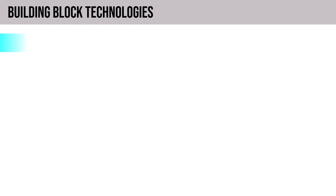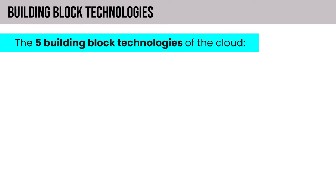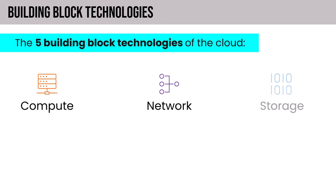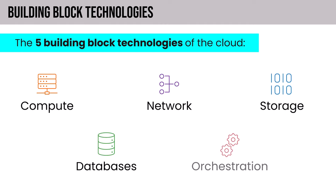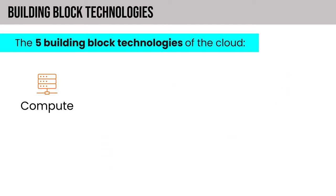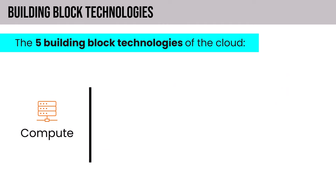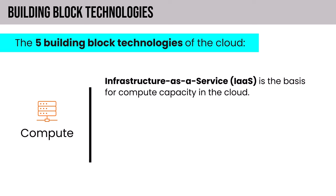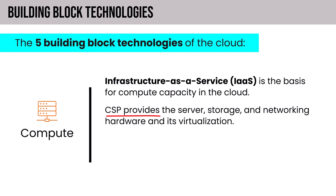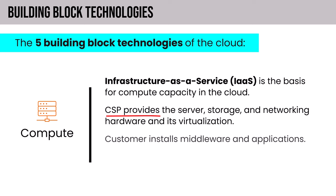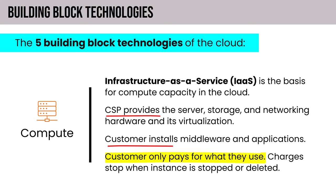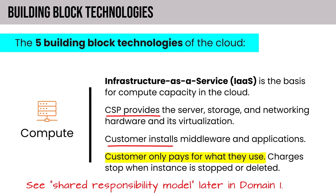Finishing section 1.1, let's talk about the five building block technologies of the cloud: compute, network, storage, databases, and orchestration. In the area of compute, infrastructure as a service, or IaaS, is the basis for compute capacity in the cloud. The CSP provides the server, storage, and networking hardware plus virtualization of all those components. The customer installs middleware and applications on virtual machines and only pays for what they use — charges stop when the instance is stopped or deleted.